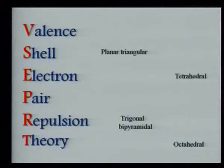Hybridization is related to VSEPR theory because electron pairs should be arranged in such a way that there is minimum repulsion. VSEPR theory indicates that if a compound has lone pairs of electrons, they should be arranged to minimize repulsion. Lone pair–lone pair repulsion is greater than lone pair–bond pair repulsion, which is greater than bond pair–bond pair repulsion. Lone pairs remain localized on the central atom, so repulsion is stronger; bond pairs are delocalized, so repulsion is less.